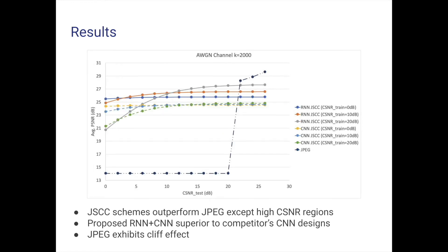Here we observe the behavior of each model over a range of channel conditions with channel bandwidth constraint of 2000 symbols. The separate source and channel coding design with JPEG compression offers superior performance only at the highest channel SNR values. For all channel SNR values below 22 dB, the JPEG algorithm is unable to compress the image sufficiently to meet the maximum communication rate of the channel, so it reconstructs the image using the mean of the pixels, leading to the cliff effect seen here. The joint source channel coding designs, by contrast, show graceful degradation of image quality as channel quality worsens.